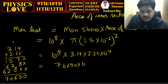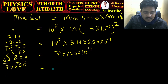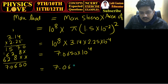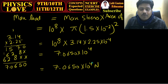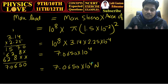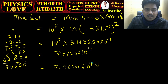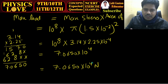Multiplying 7.0650 by 10 to the power 8, and since the radius was in cm (10 to the power minus 4 in meters squared), the result is 10 to the power 4. So the maximum load is 7.0650 into 10 to the power 4 Newton. Simple question, simple calculation — I hope you understood this. If you did, share it with your friends!